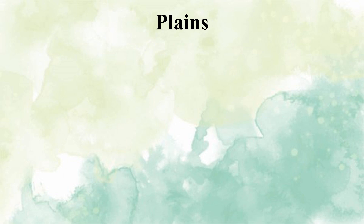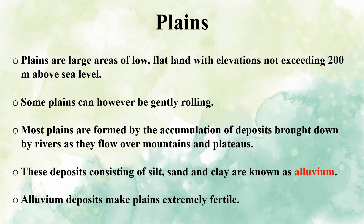Plains are low and flat land with elevation not exceeding 200 meters above sea level. Some plains can however be gently rolling. Most plains were formed by the accumulation of deposits brought down by rivers as they flow over mountains and plateaus. These deposits consisting of silt, sand, and clay are known as alluvium. This alluvium soil is rich in mineral content and makes plains extremely fertile.